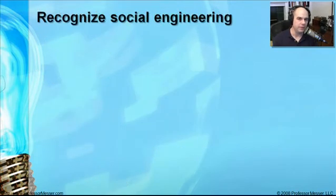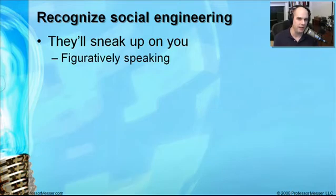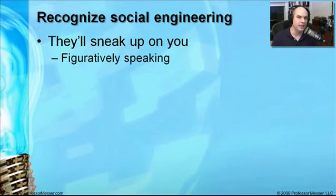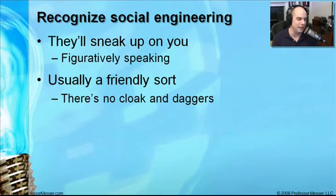Social engineering is a major focus of the CompTIA requirements, probably because it really happens almost without any warning. You'll suddenly be in a situation and realize someone is trying to get information out of you and they really aren't who they say they are. Social engineering is something you can't predict, and the technology we have in place from a security perspective can't even identify it. This is completely related to people working with people, and it's usually something where someone is very friendly — it's very uncommon to find somebody angry trying to get information from you.